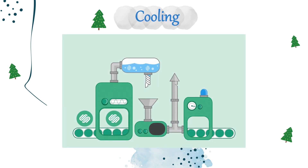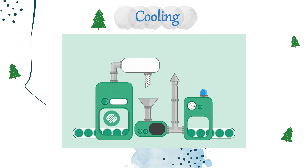Step 3: The next step is kneading. Extruder machines are used to blend, smooth, and form the gum. A cutting machine cuts the sheets into sticks or small pellets, which are later candy-coated.